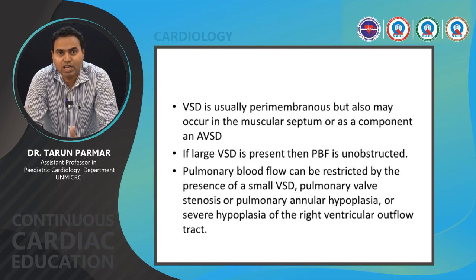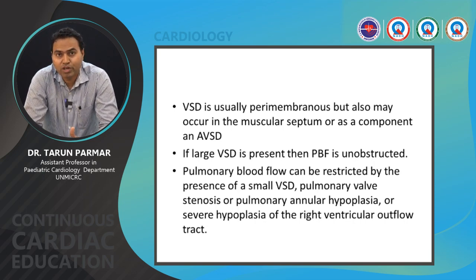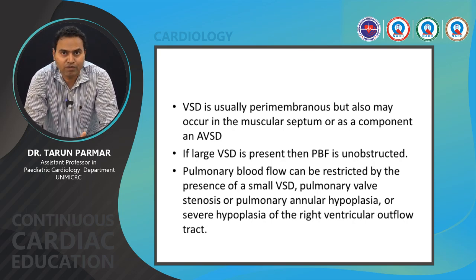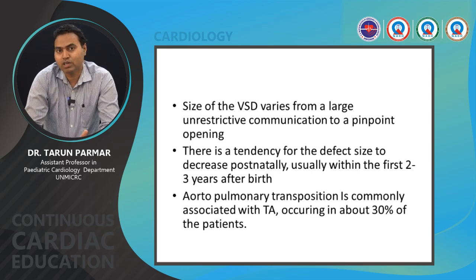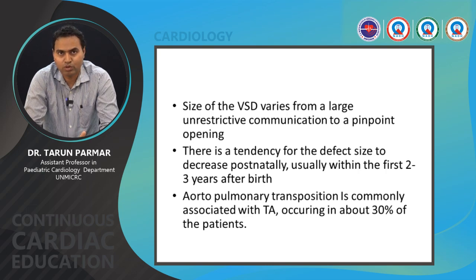If the VSD is larger, there is increased pulmonary blood flow leading to pulmonary overcirculation. Pulmonary blood flow is restricted at various levels — in the case of a small or restrictive VSD, at the infundibular level, pulmonary valvular level, or sometimes pulmonary valve atresia. The size of the VSD is variable, from non-restrictive to pinpoint. Pulmonary stenosis is effectively at the VSD level in restrictive cases, while large VSD leads to increased pulmonary flow, as seen in type 1C or 2C situations.